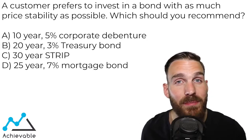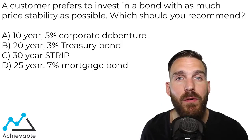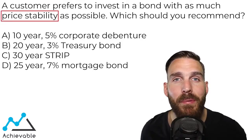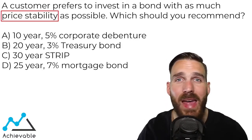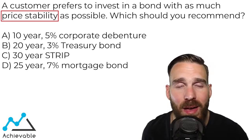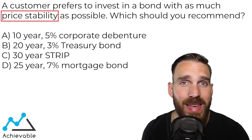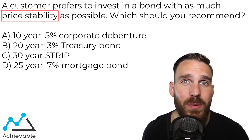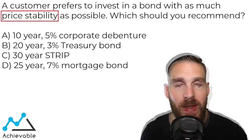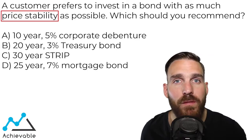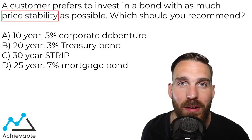This one's not exactly easy, but let's see how confident you are in your answer. We have a customer that's looking for as much stability in price as possible, which is a fancy way of saying we don't want to see big swings in market value. If a bond is worth $1,000 today, we want it to remain close to $1,000 no matter what happens in the market. They're investing in one of four different bonds, and we need to pick the one that exhibits that characteristic.